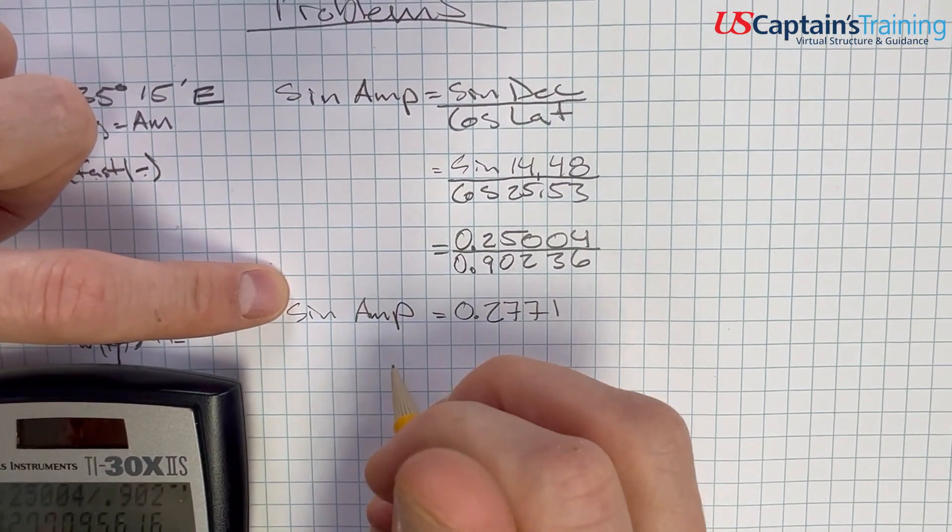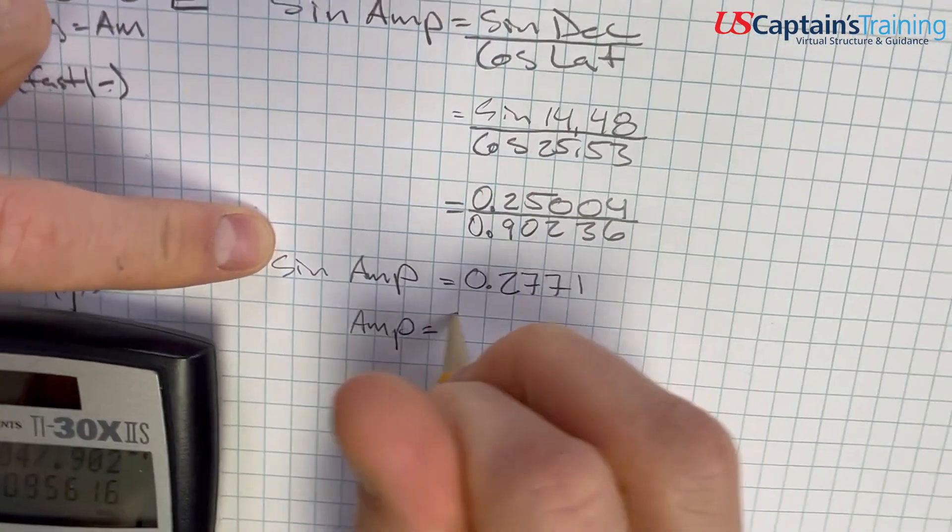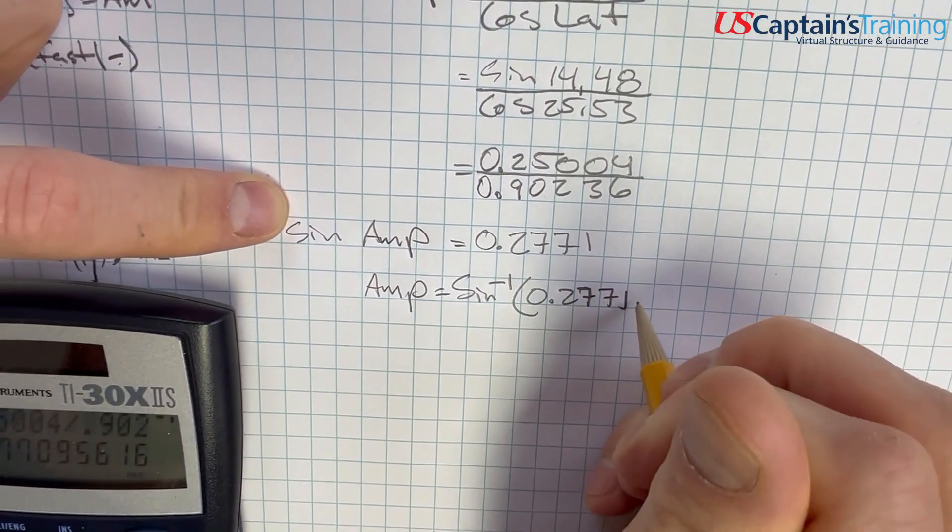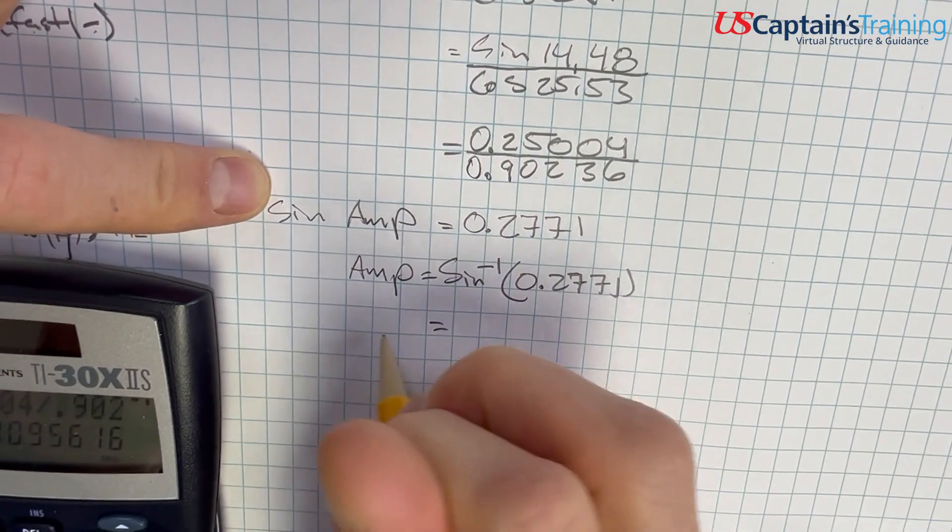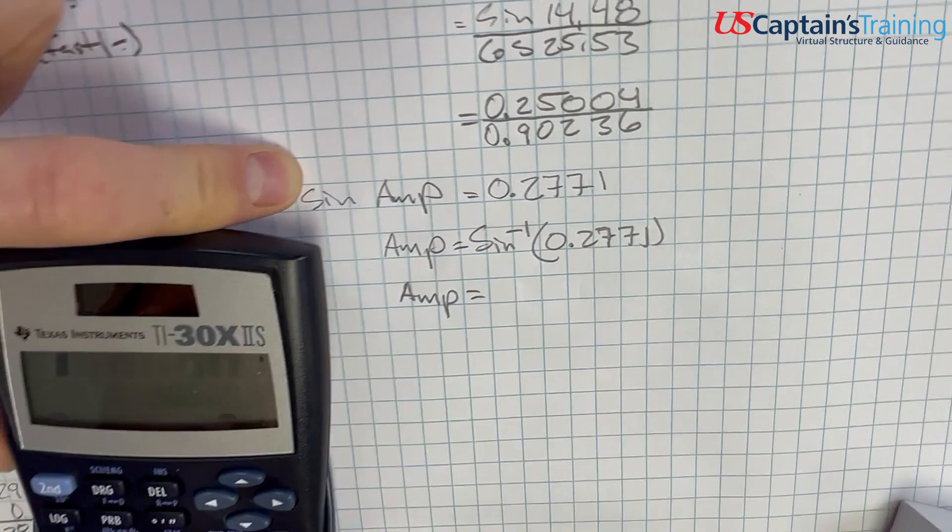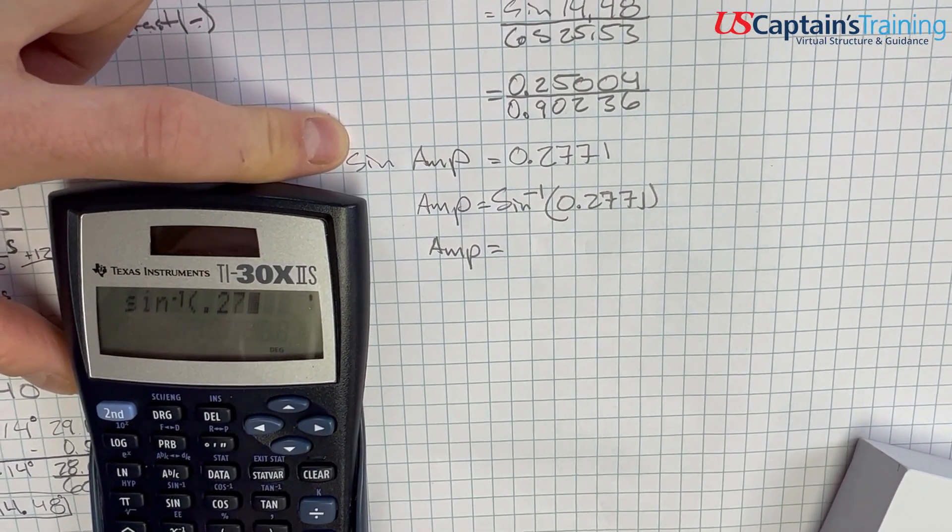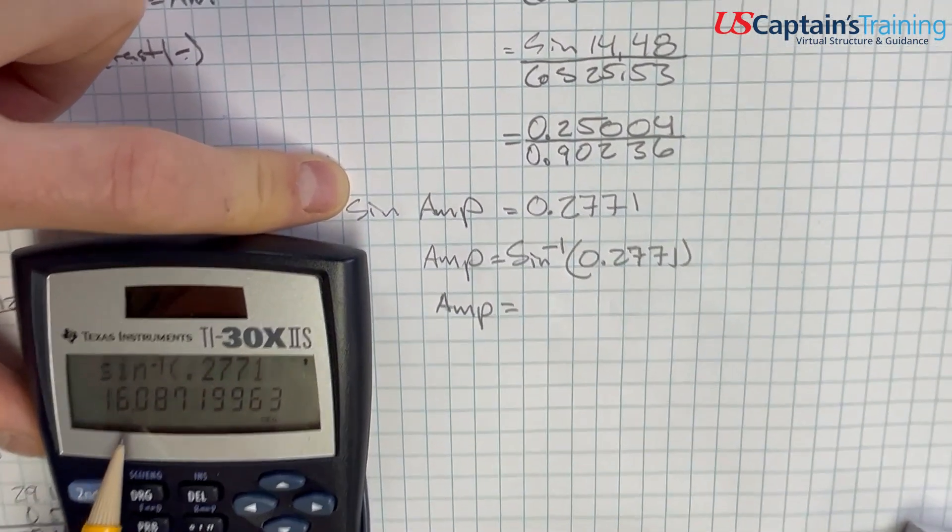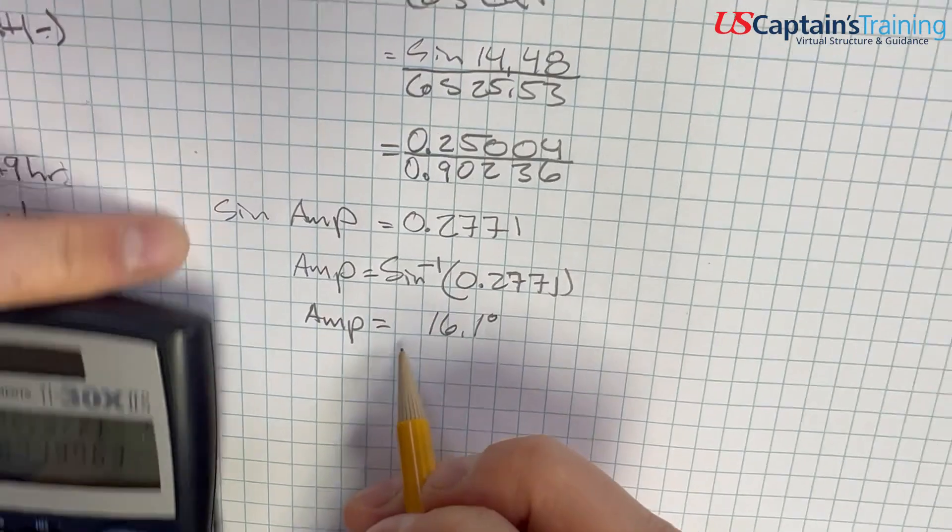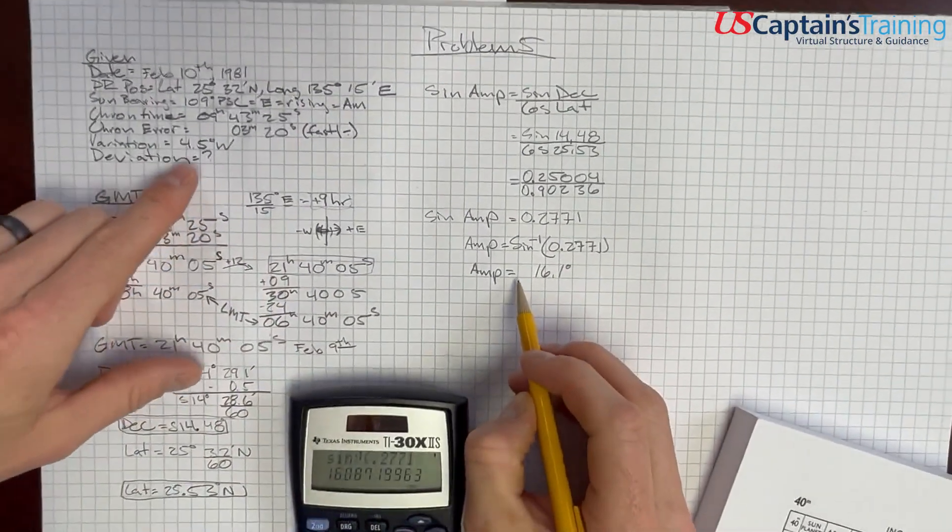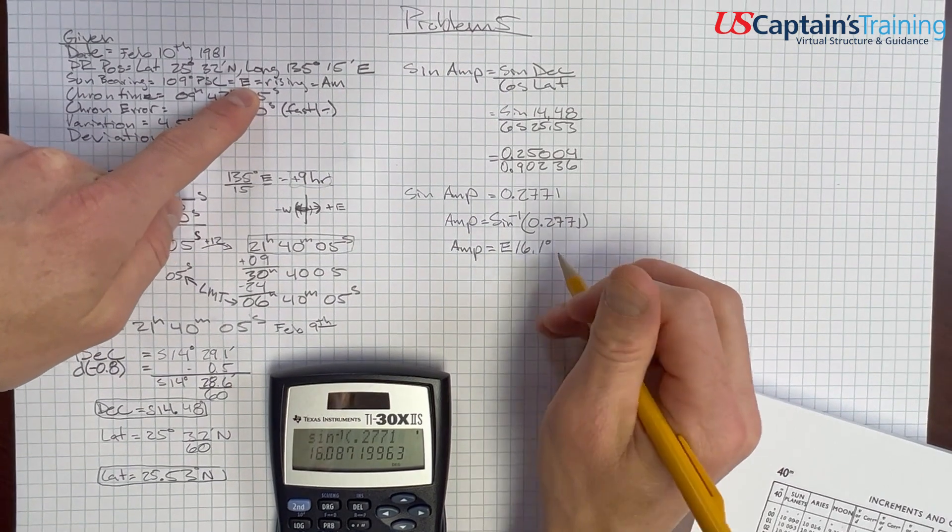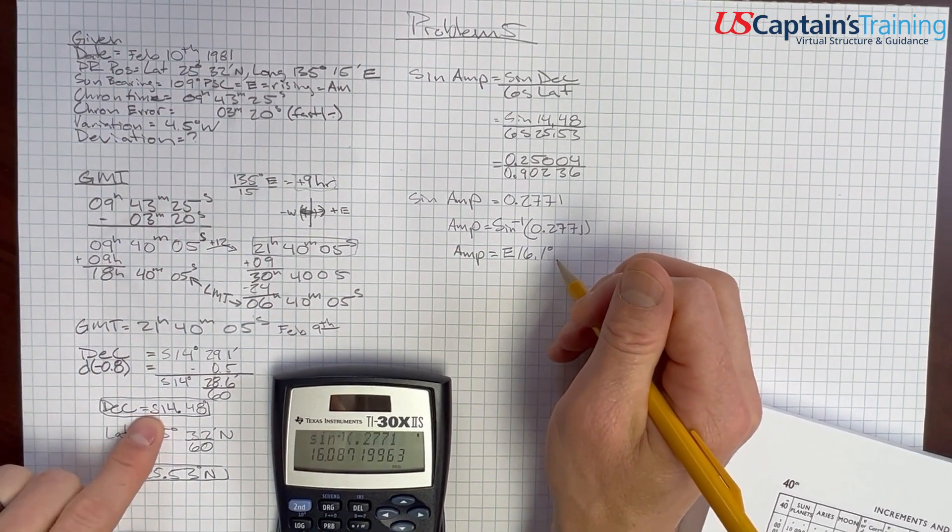We need to take this sine, put the sine inverse over here. So amplitude equals sine inverse 0.2771. So now the amplitude, this is going to come out in quadrantal notation. So we go second, sine inverse, 0.2771 equals 16.1 degrees. We have to name this thing. So we name it east or west here. The sun was bearing 109, so we were east, we were rising. So we'll name it east. And then we name it north or south based on our declination. Our declination was south.